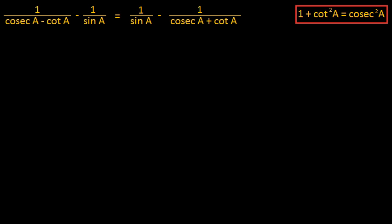Here we have one more simple problem based on trigonometry in which we are trying to prove an equality. We have to prove: 1 by cosecA minus cotA, minus 1 by sinA, is equal to 1 by sinA minus 1 by cosecA plus cotA. It looks very simple — there is just a change of signs in between.